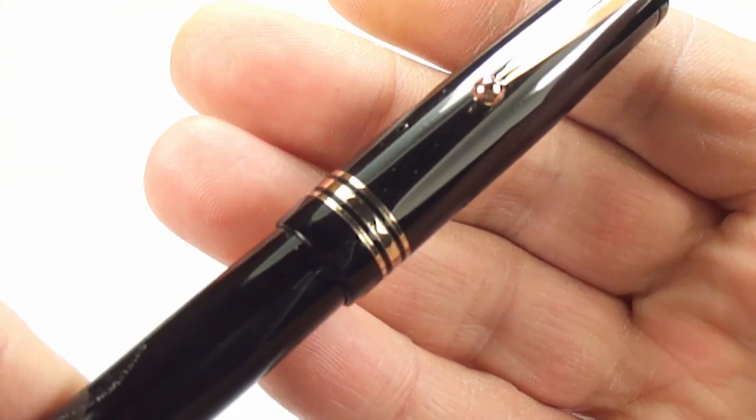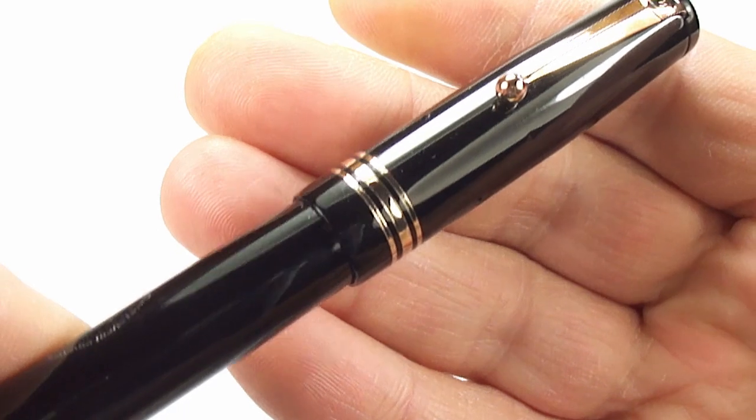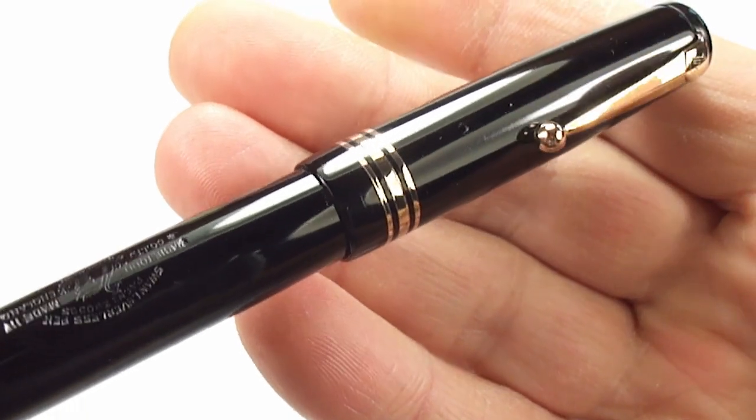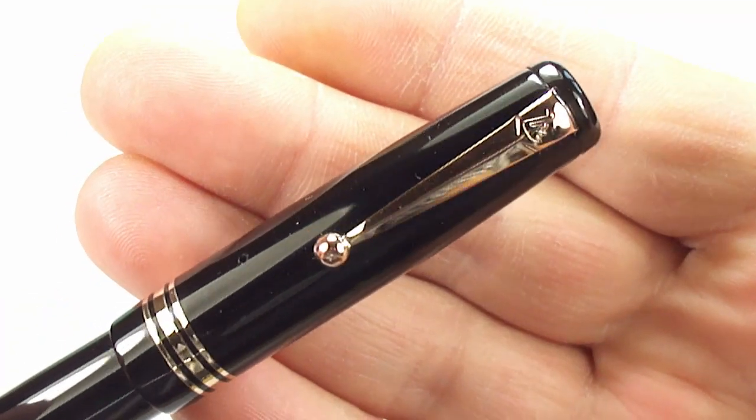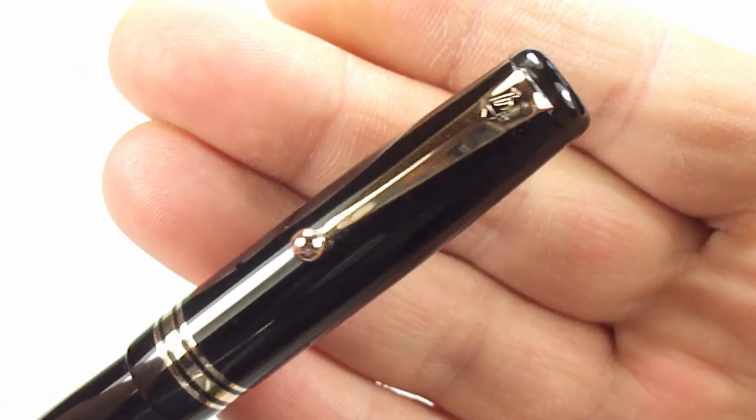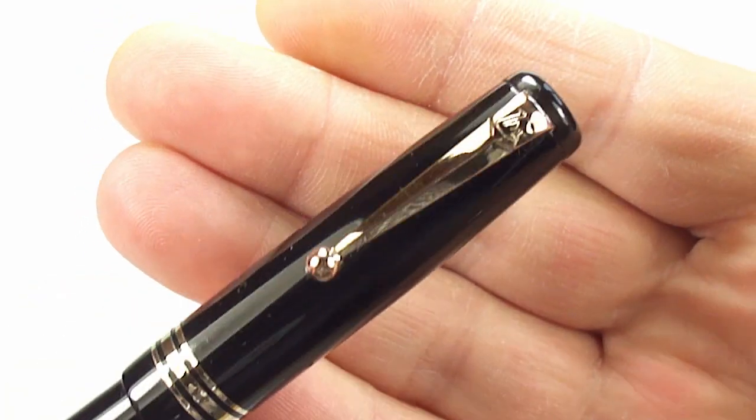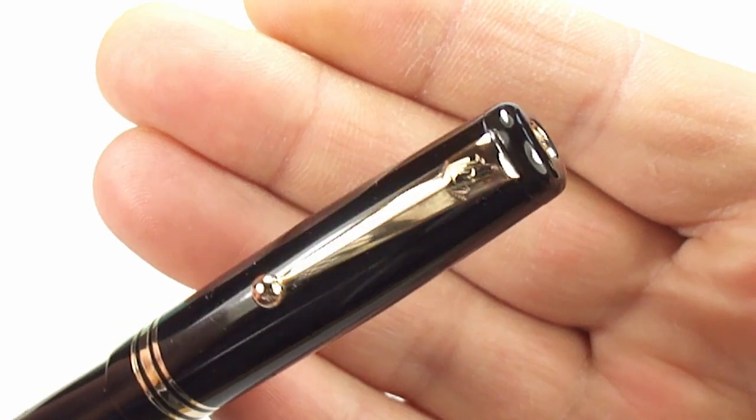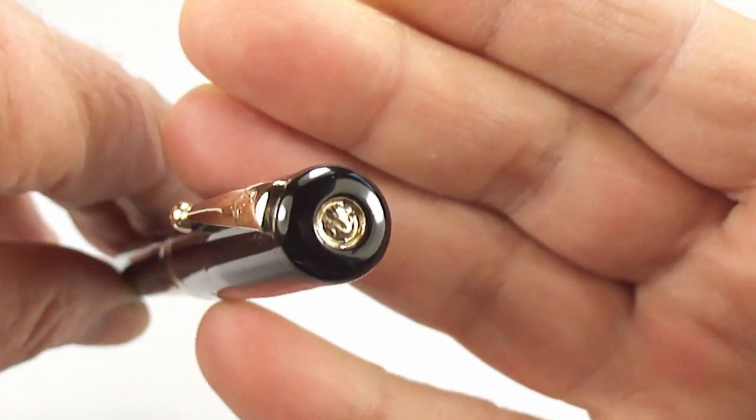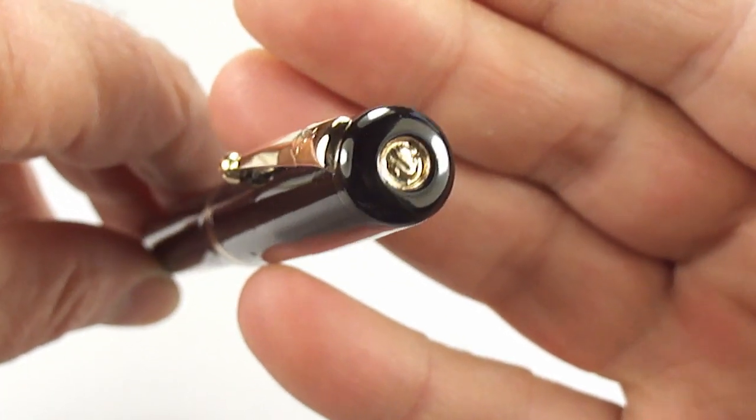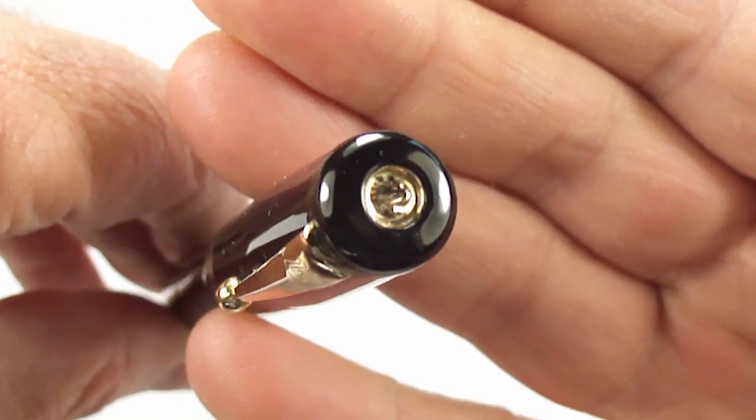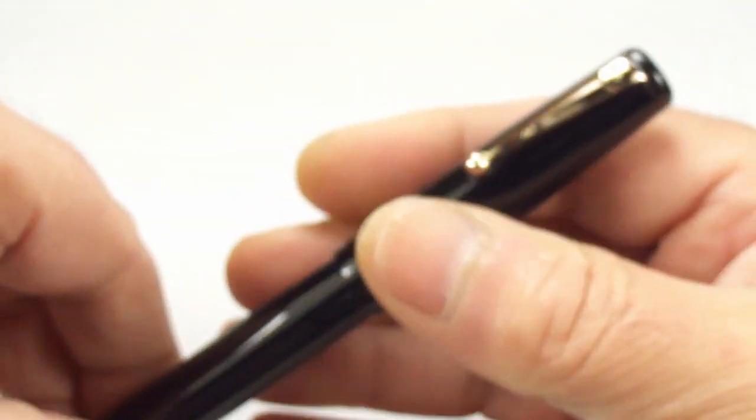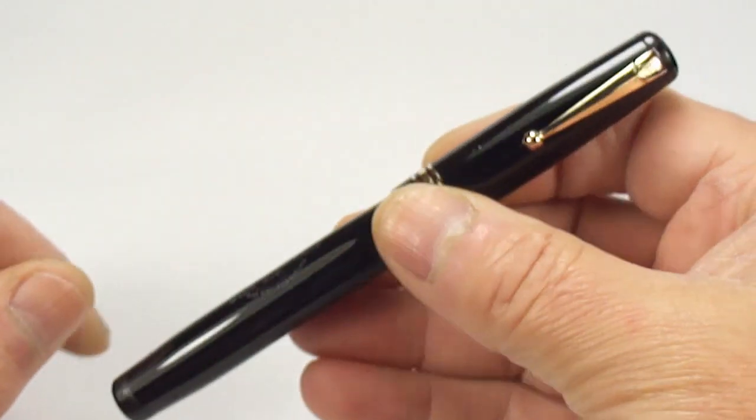Now let's take you up to the cap. It's got quite a large band in the middle with these two smaller ones to each side. We've got the very recognizable Swan ball clip there. You can see it's got the Swan logo to the very top of the clip, and to the very top you can see it's got this gold button with the Swan logo to the center there. An absolutely gorgeous pen.